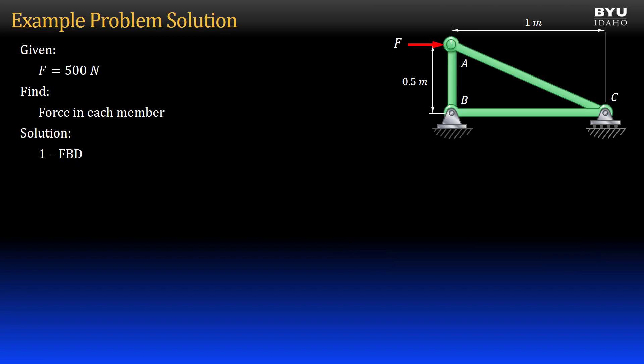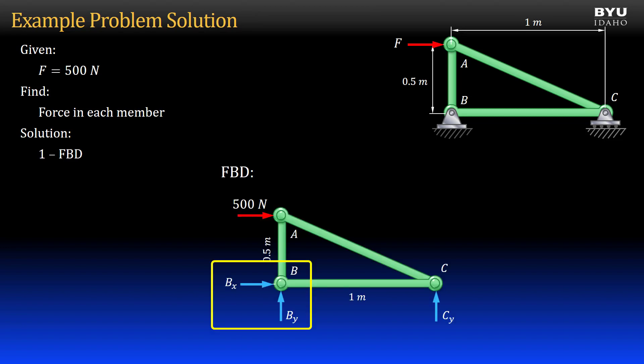Our first step is to draw a free body diagram of the full structure. I replace the pin support at B with x-direction and y-direction reaction forces. I replace the roller support at C with a y-direction reaction force. I also calculate the length of member AC. I will leave it in this radical form for convenience.